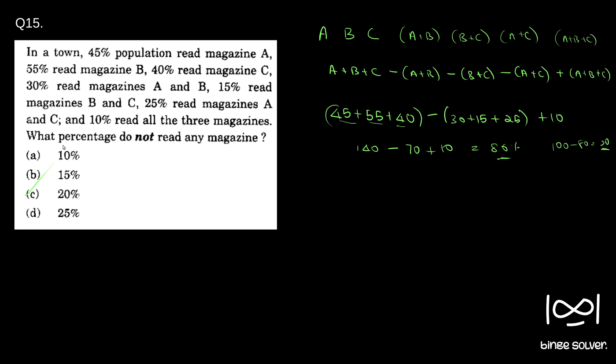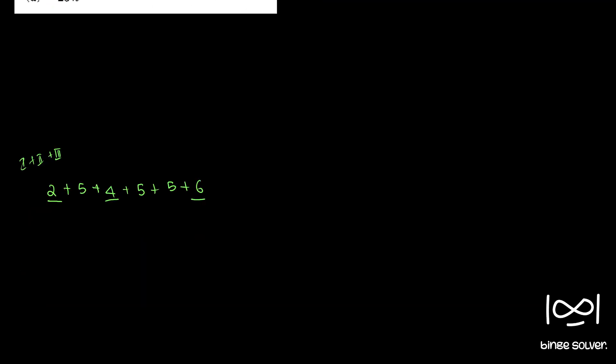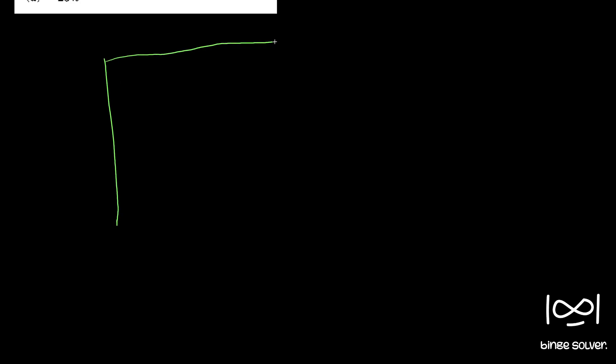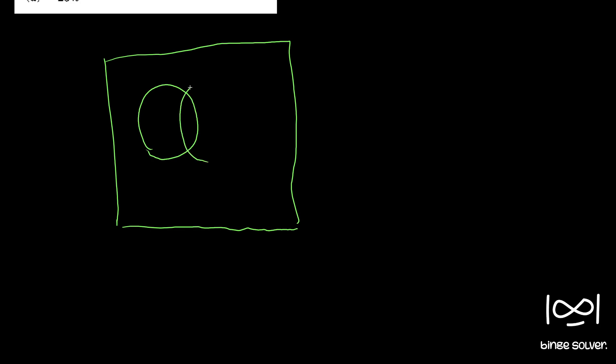So 100 minus 80, which is 20, is the answer — 20 percent. Option C is the answer to this question. This is how, if we know the formula, we can quickly find the answer. For people who are not familiar with this formula, I will just explain how this formula works. I'll just draw a new figure here.